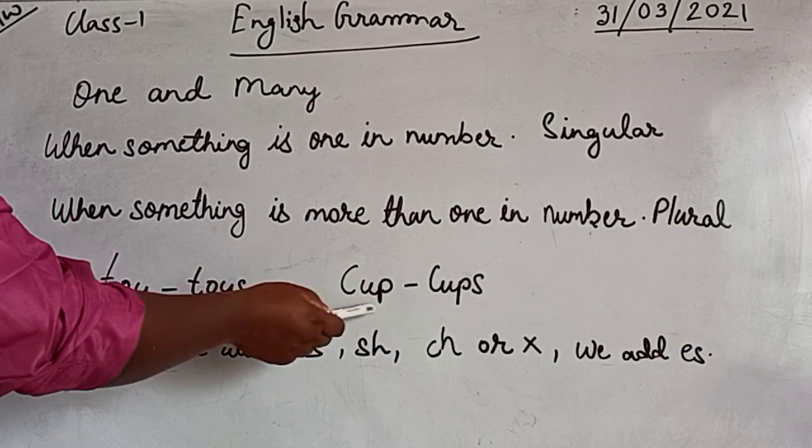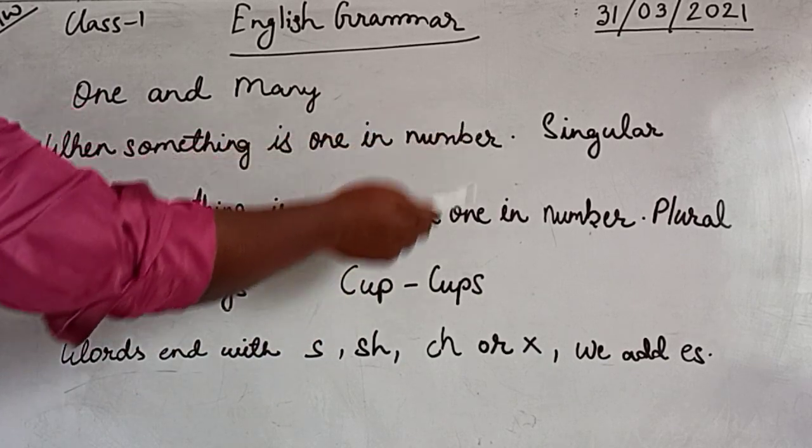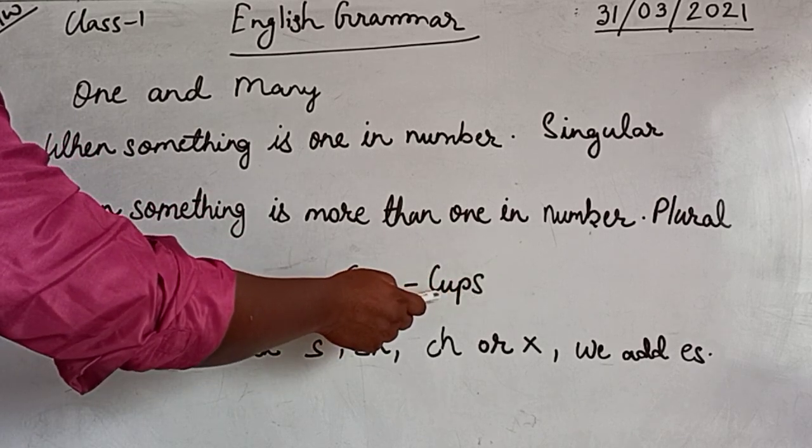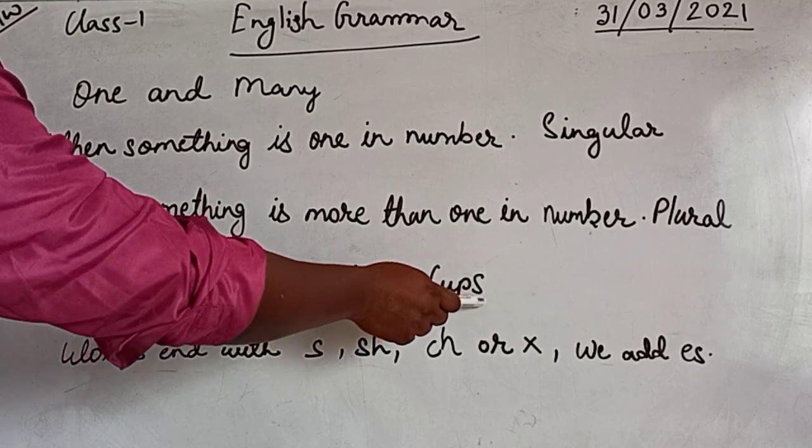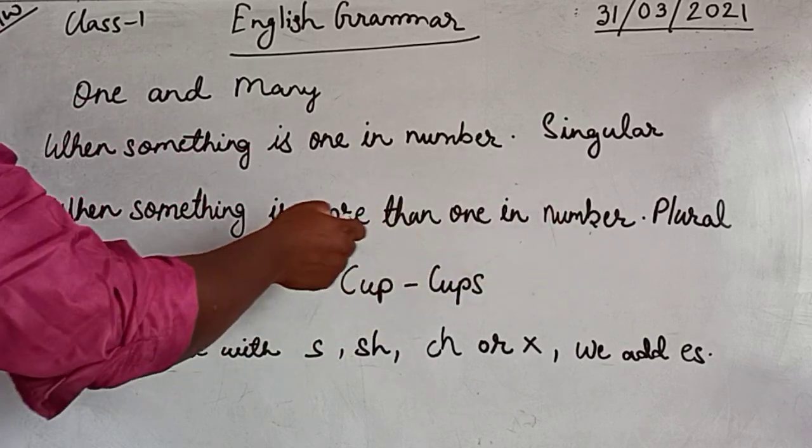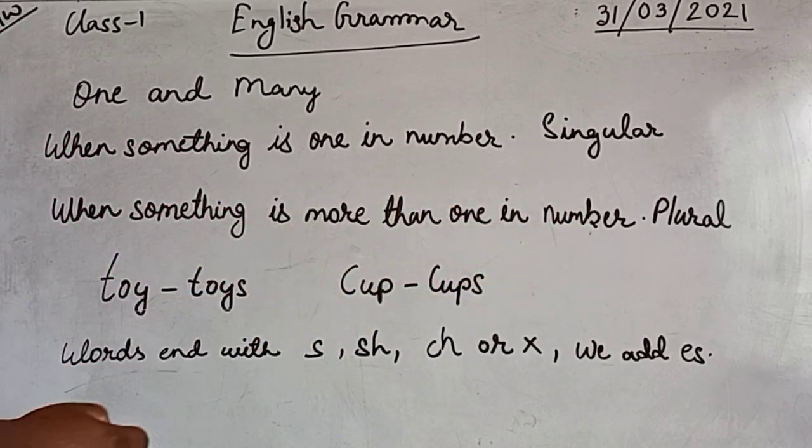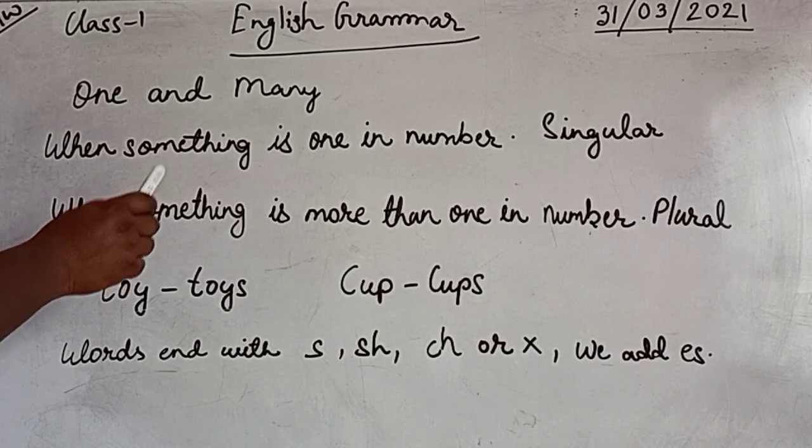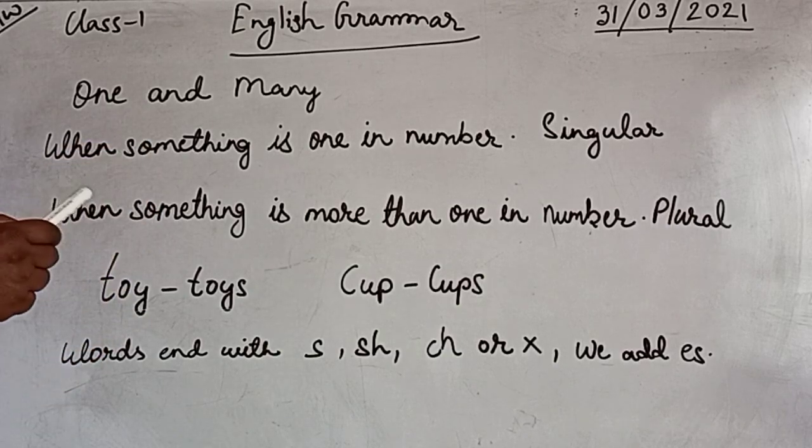In the word curve we add 's' to make it plural, showing it is more than one in number. Always remember: we show that a word or noun is plural by adding 's'. One more thing - words that end with s, sh, ch, or x, we add 'es'.